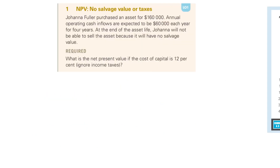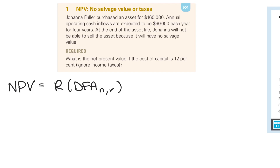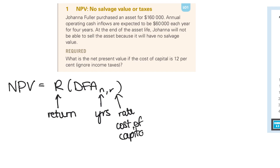So if we go to the question from the textbook, we're going to use a formula. The net present value formula is: Present Value = Cash Flow × DFA(N, R), where the cash flow is the expected return, DFA is a factor from a table, N is the number of years, and R is the rate — which remember is our cost of capital.